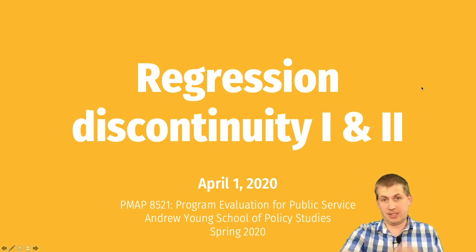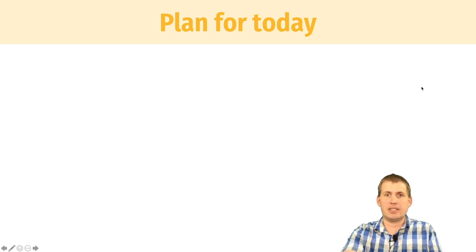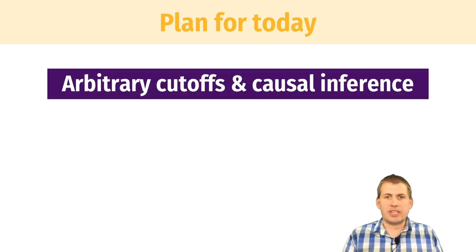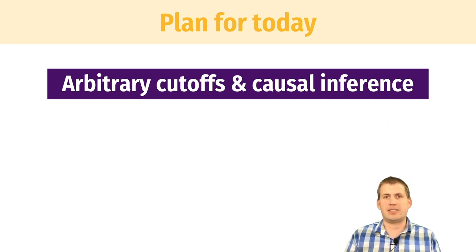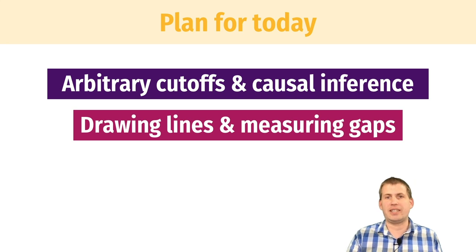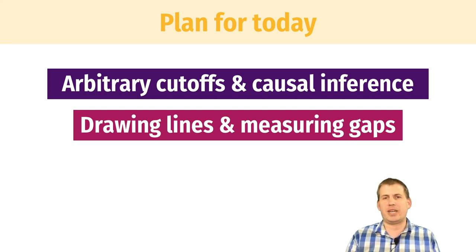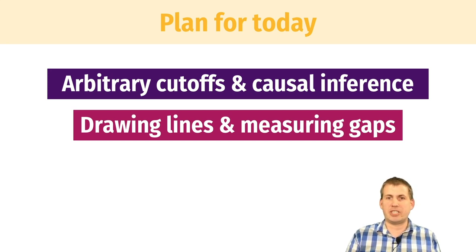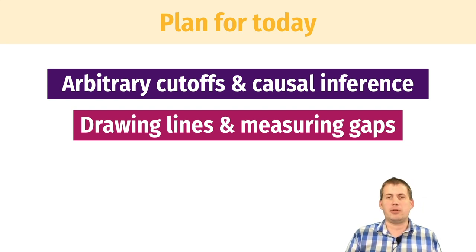The plan for this lecture is as follows. We'll start by talking about arbitrary cutoffs in policies that exist and why that's important for causal inference — how that lets us make causal inferences from natural experiments we find in the world. Then we'll talk about how to draw lines and measure gaps, which will include a brief review of early statistics and algebra topics around drawing lines with formulas and measuring gaps between two lines, because that is what we care about most for causal inference.